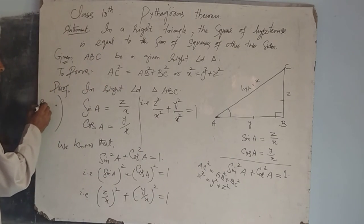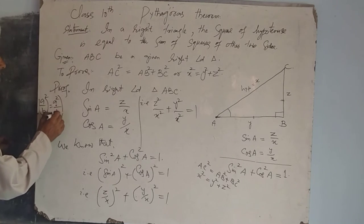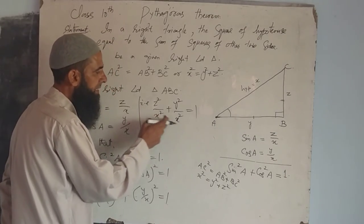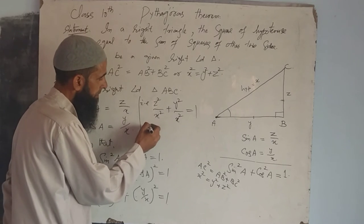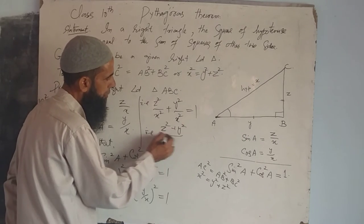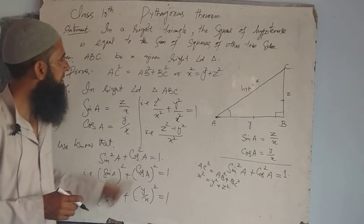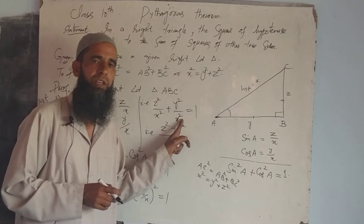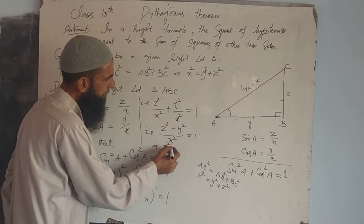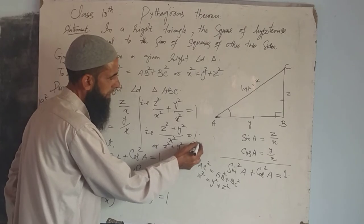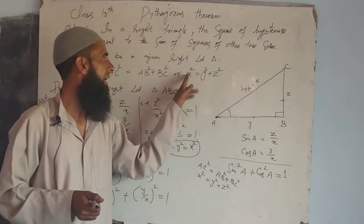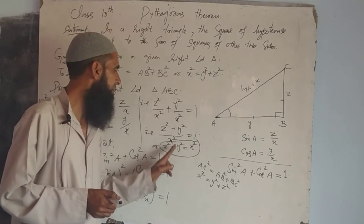Since (A/B) squared equals A squared by B squared, we have Z squared plus Y squared divided by X squared equals 1. Since X squared is the common denominator, multiplying both sides by X squared gives us Z squared plus Y squared equals X squared.